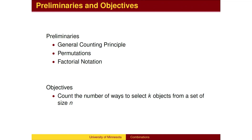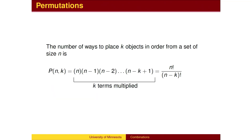In this lesson, we will count the number of ways to choose k objects when we are not concerned with the order of selection. Recall that when we are placing k objects in order, we multiply k terms, beginning with n, and going down by 1 each time.